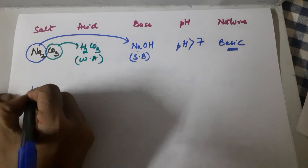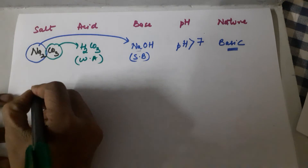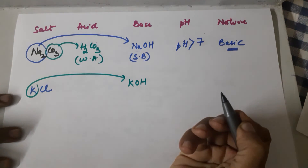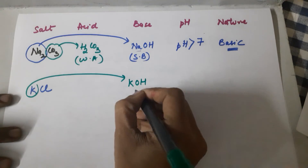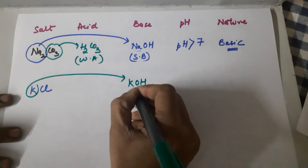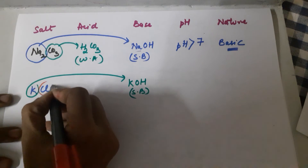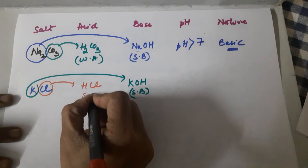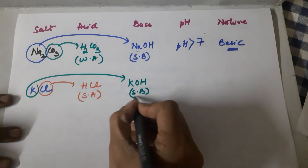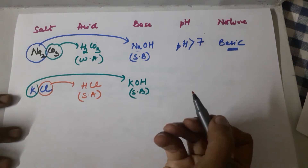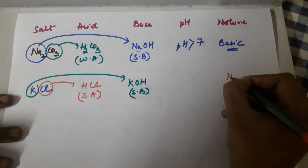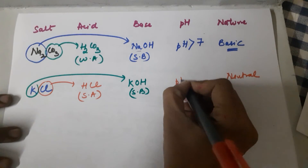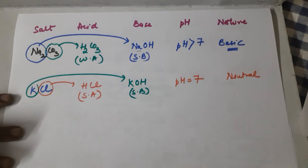Next example: potassium chloride, KCl. Add OH⁻ to K⁺ to get KOH — potassium is highly reactive, so KOH is a strong base. Add H⁺ to Cl⁻ to get HCl — a strong acid. When a strong acid and a strong base combine, they neutralize each other completely, so the salt is neutral and the pH is 7.